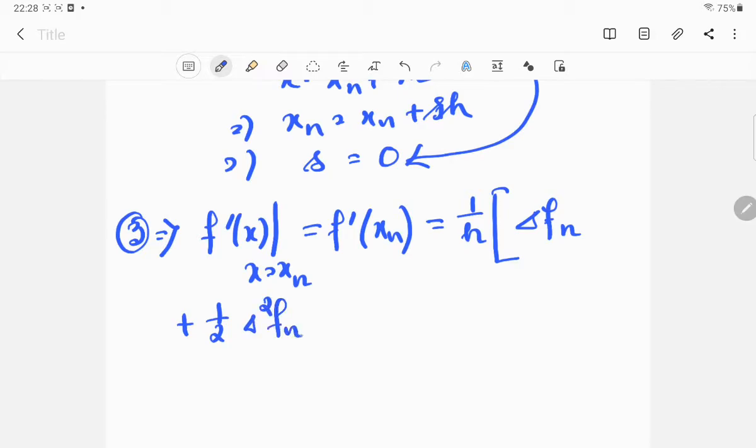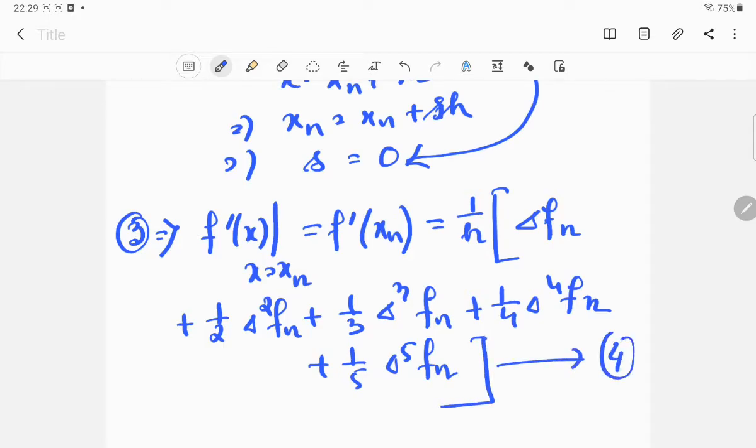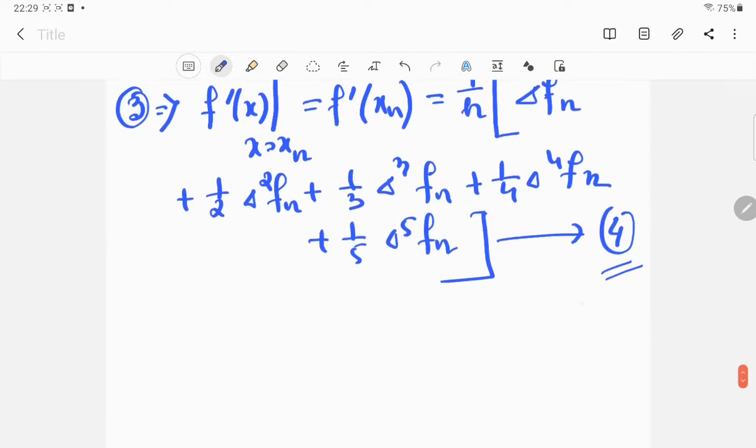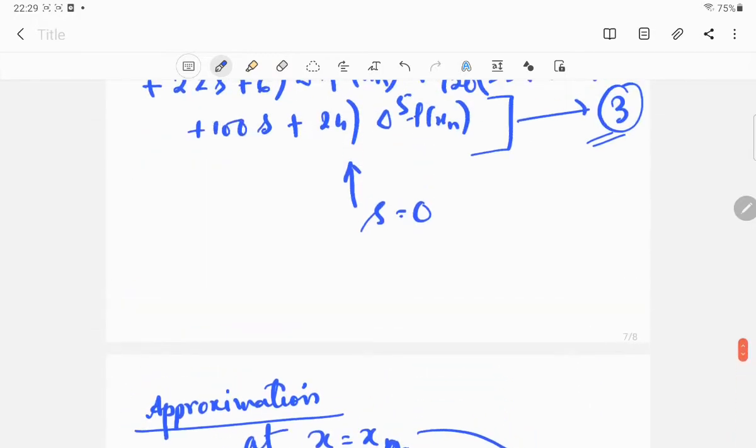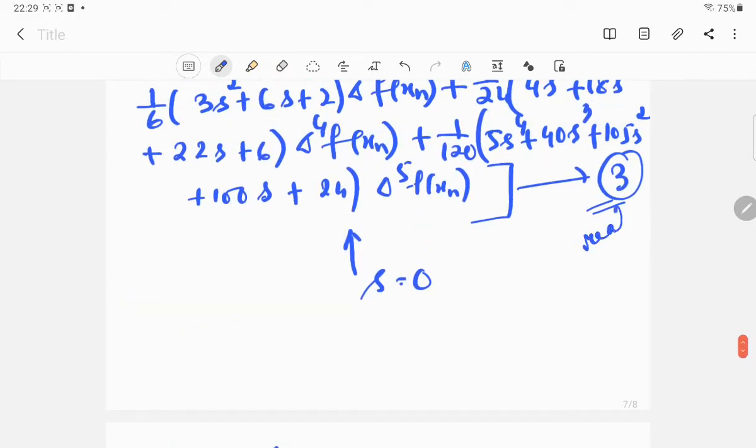1 by 2 del 2 f_n plus 1 by 3 del 3 f_n plus 1 by 4 del 4 f_n. So that is equation number 4. Remember, this is the approximation equation, this is not the real equation. This is the approximation equation and equation number 3 is the real equation.